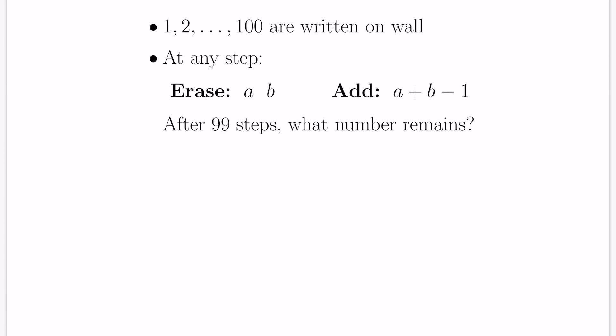For this next problem, imagine you're given the numbers 1 through 100 written on a wall. You start the following procedure. At any step, you're allowed to erase any two random numbers, say A and B. But when you cross them out from your list, you need to replace them by a new number, the number A plus B minus 1. After you do this 99 times, you'll have two things that you erase and replace with one. So the number of things in your list will decrease by one each time. After 99 steps, you're going to be left with only one number.